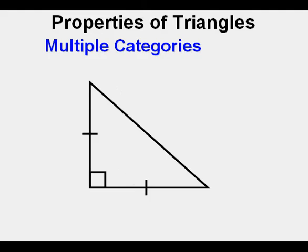This triangle that we looked at earlier with a right angle and two sides equal is an isosceles right triangle.